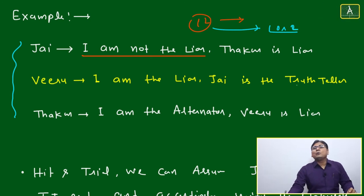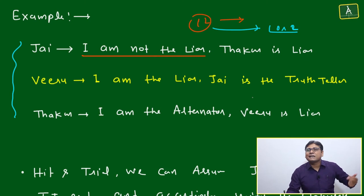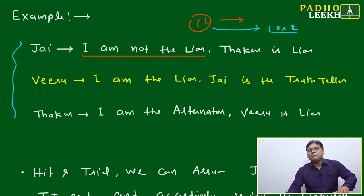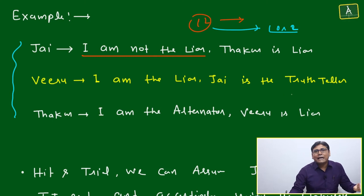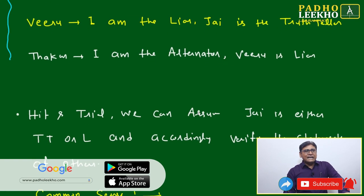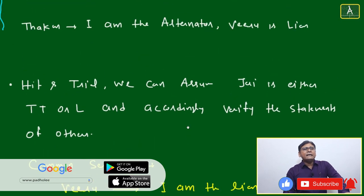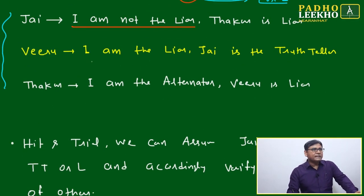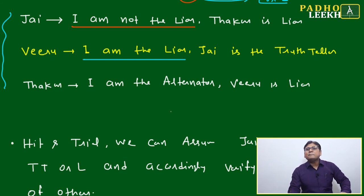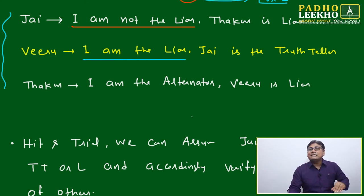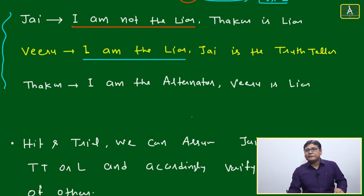Consider this statement: 'I am not a liar' — can this be made by a liar or a truth teller? Now look at Viru's statement: 'I am a liar.' Can a truth teller say 'I am a liar'? No — that is a contradiction. If he is a truth teller, he cannot say he is a liar.